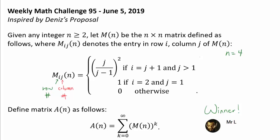The easiest part: when i equals 2 and j equals 1, we have an entry of 1 at row 2, column 1. Now, when our row number is our column number plus 1, and we are not looking at the first column, we are going to have j over (j minus 1) squared. Let's look at each column — we exclude the first column because j must be greater than 1.